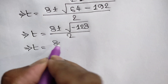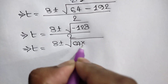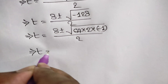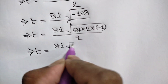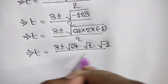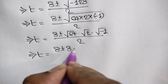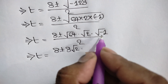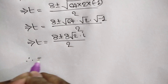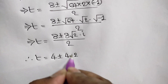We can write negative 128 as 64 times 2 times negative 1. So the square root of negative 128 equals the square root of 64 times the square root of 2 times the square root of negative 1, which equals 8√2·i. Therefore t equals 8 plus or minus 8√2·i, all over 2, giving us t equals 4 plus or minus 4√2·i.